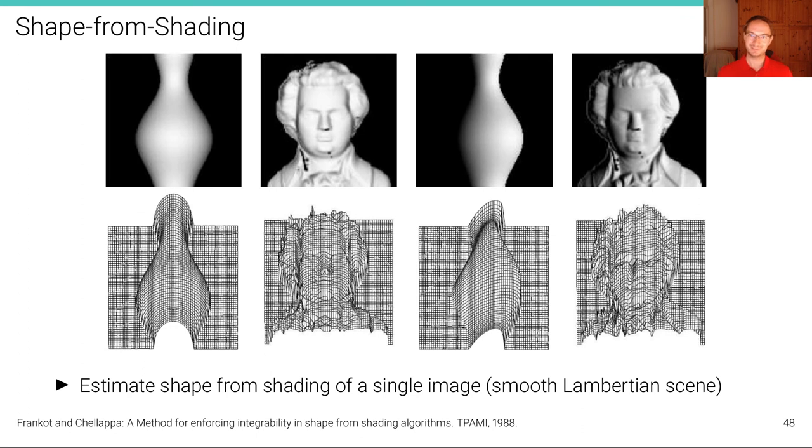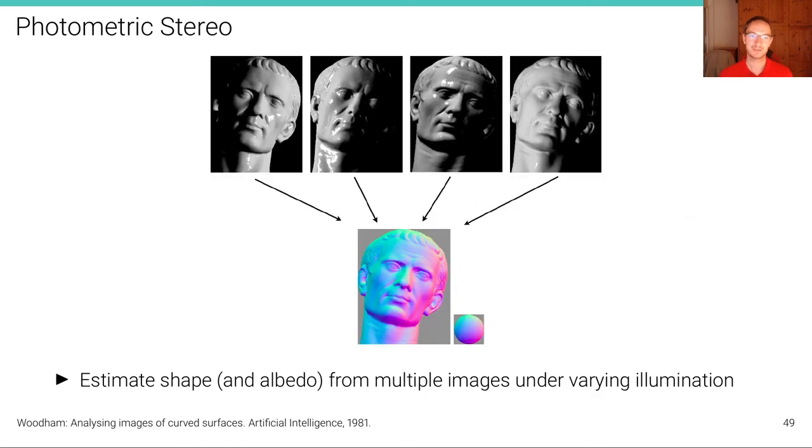We have seen in this lecture how we can obtain geometry from even a single image using shading cues. We have seen how we can remove some of these strong smoothness assumptions by using more observations, by considering multiple images captured from the same camera viewpoint, which is called photometric stereo.